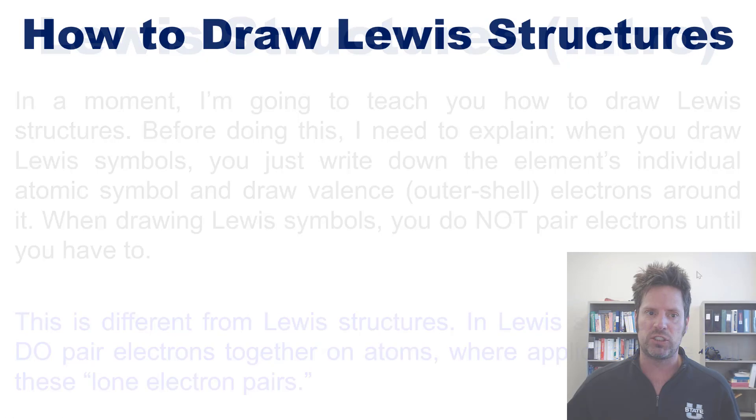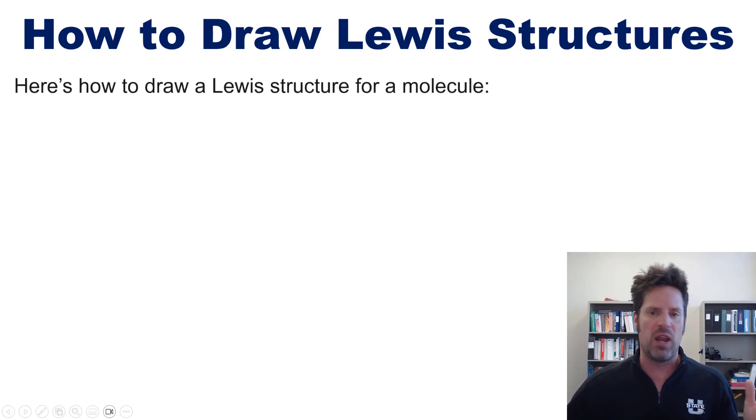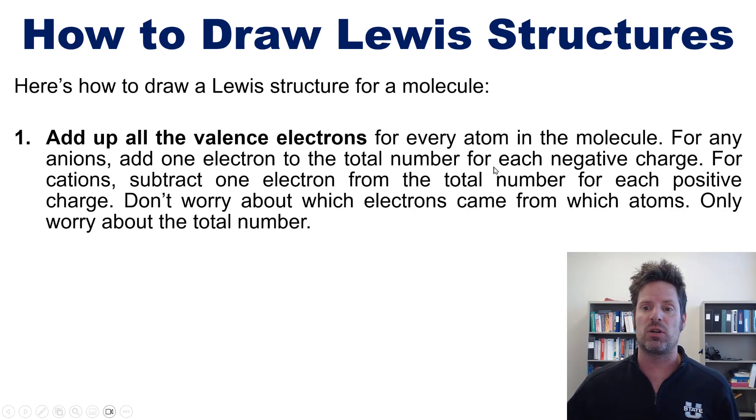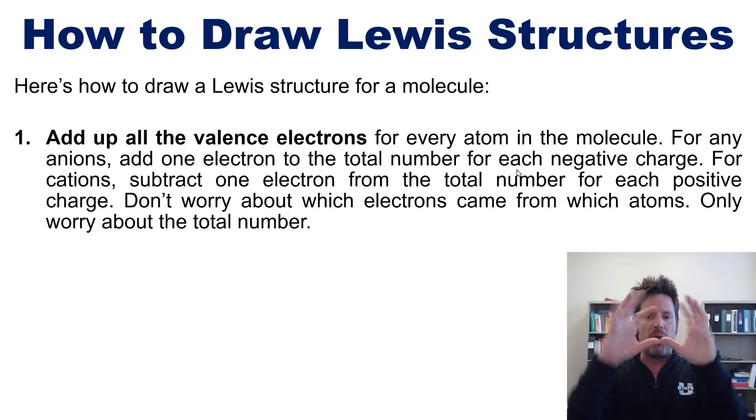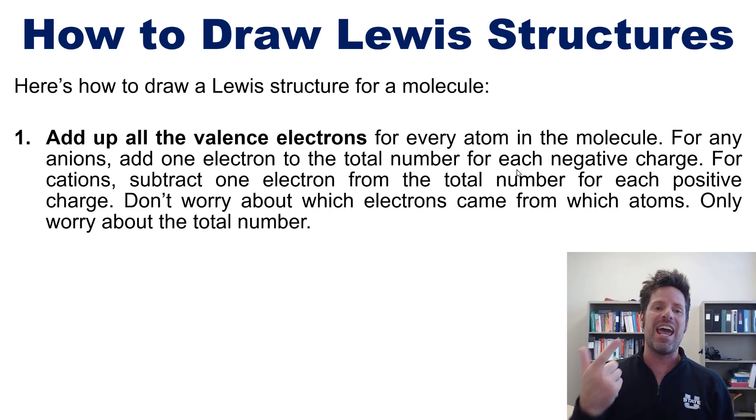So how do you draw Lewis structures? Okay, to do that, we just follow a few steps. One, we add up all the valence electrons for every atom in the molecule by looking at the column in which that atom appears on the periodic table. Now if you have a charge written over your molecule, then you have to do some additional stuff. You see, for anions, negative charges, you have to add one electron to the total number of your electron count for each negative charge. And for cations, you have to subtract one electron from your total number of electrons you're counting for each positive charge. In the process, don't worry about which electrons come from which atoms. Only worry about the total number.